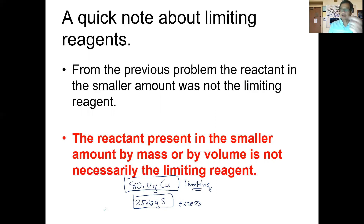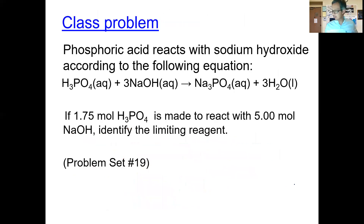There is a second method for doing limiting reagent calculations that you'll see in other textbooks. That method requires you to take both reactants, calculate how much product each would form, and then the reactant yielding the smaller amount of product is your limiting reagent. I don't prefer that method because you have to do two calculations. If you're curious about it, stop by after school today and I'll show you how it's done.